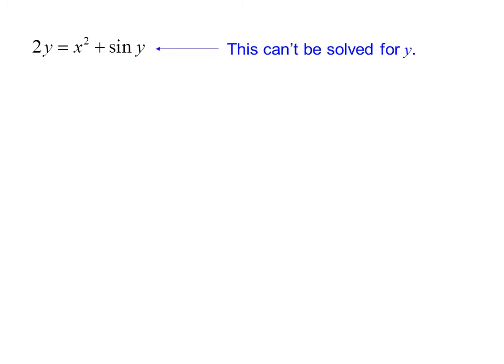Here's another one. 2y equals x squared plus sine y. Now this one can't be solved for y.